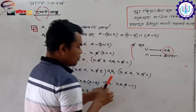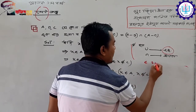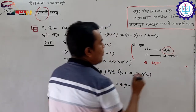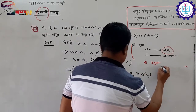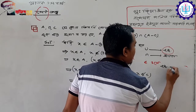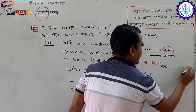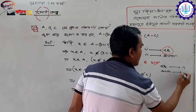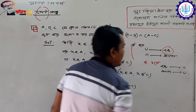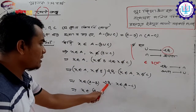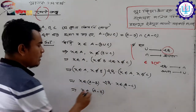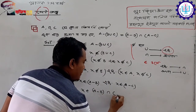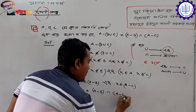So x belongs to B; C belongs to B. Union partners: x belongs to B, x belongs to C; x belongs to C; x also belongs to A; x belongs to A; x not dot; x belongs to C.